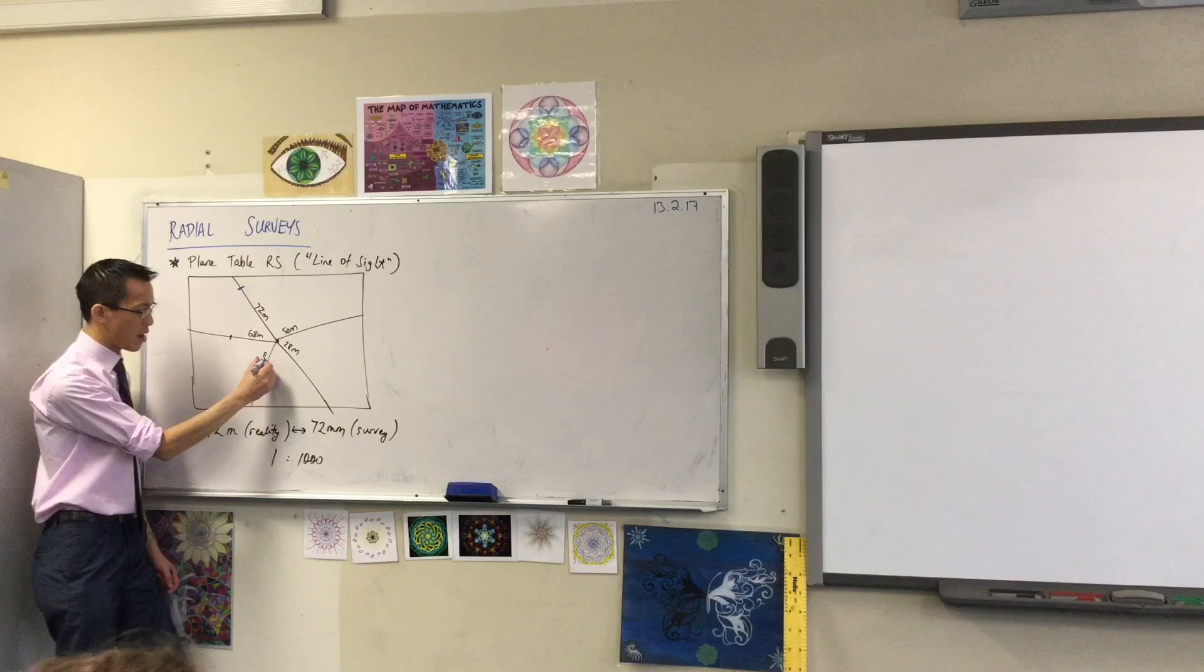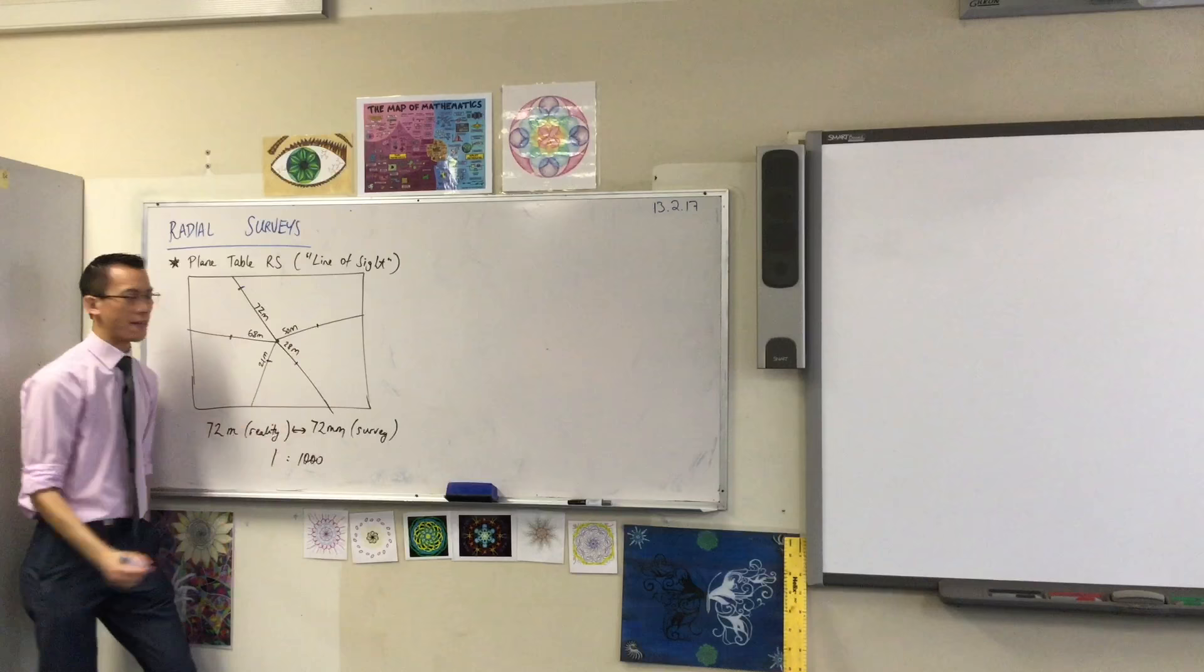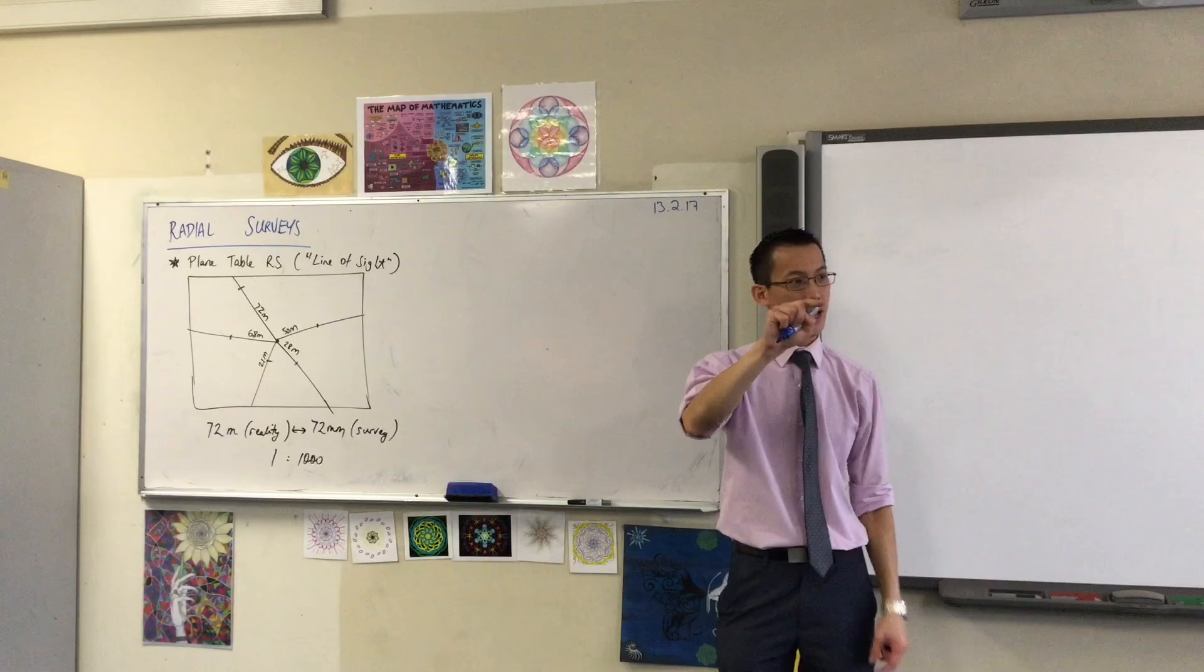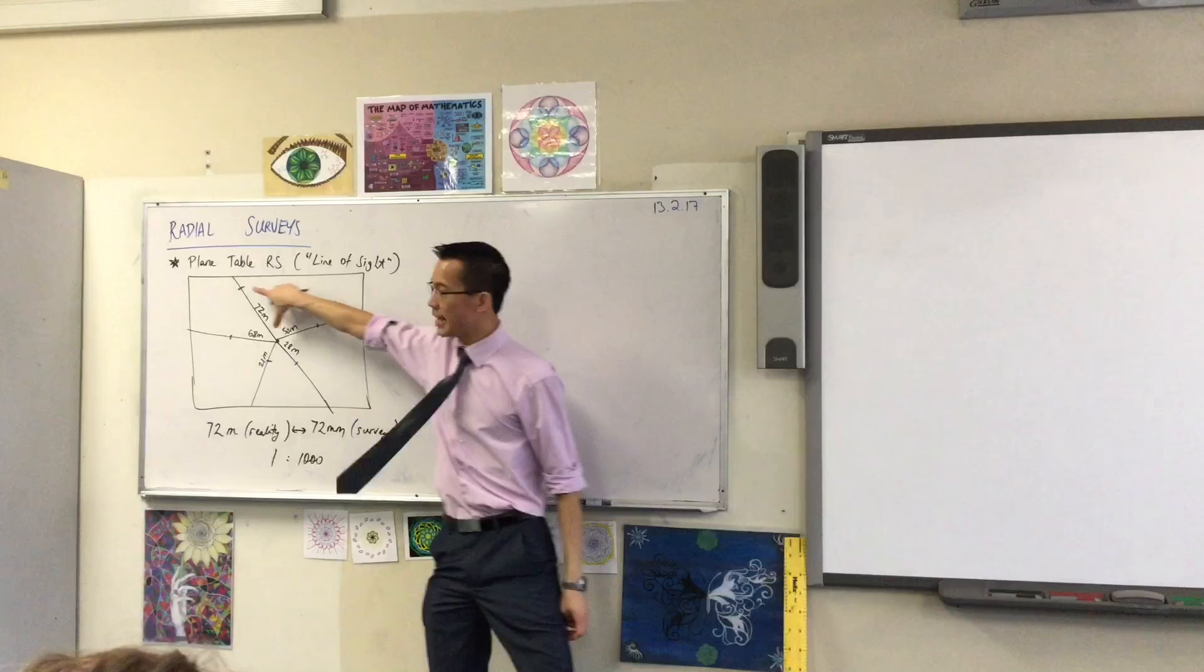I'm going to do the same thing for all of them going all the way around. So this one, 21 meters, will be represented by 21 millimeters, 28 millimeters, and let's call that about 50. So you're measuring from your center point out along your radial lines, that's what we call them, whatever you measured.